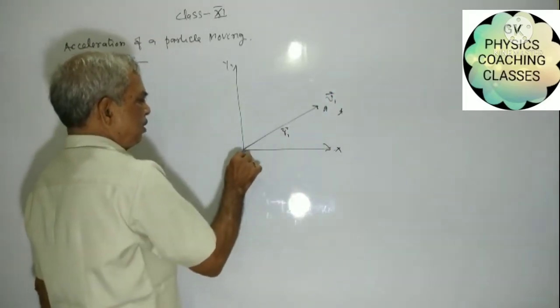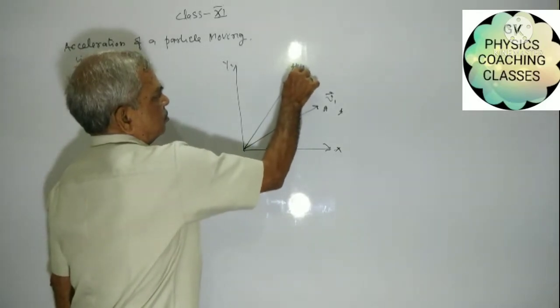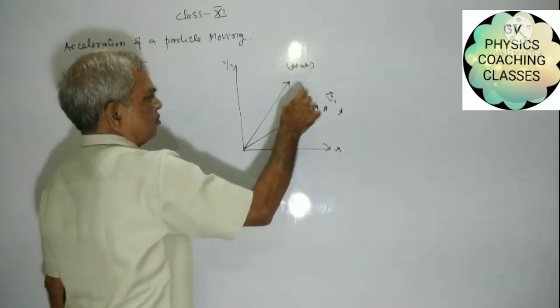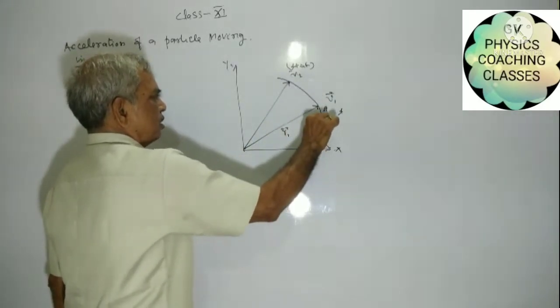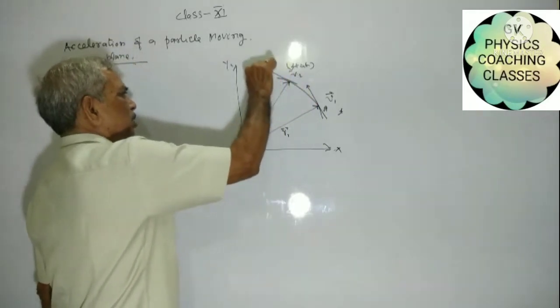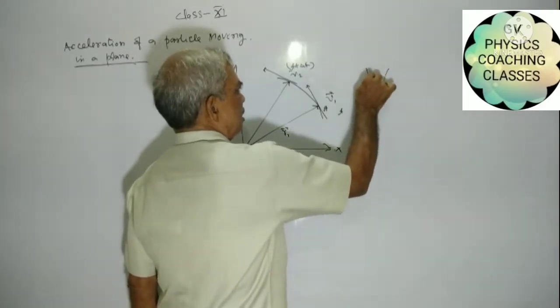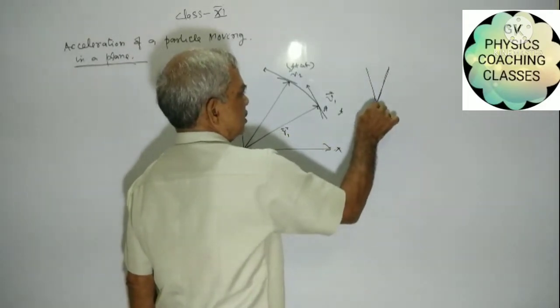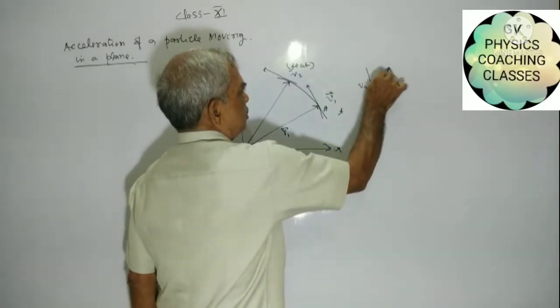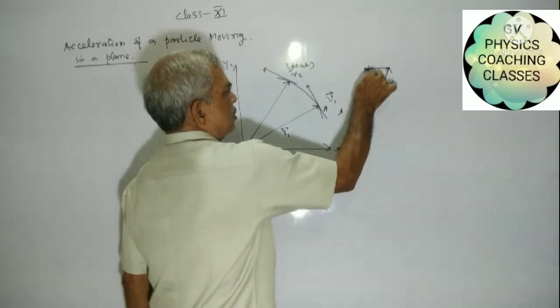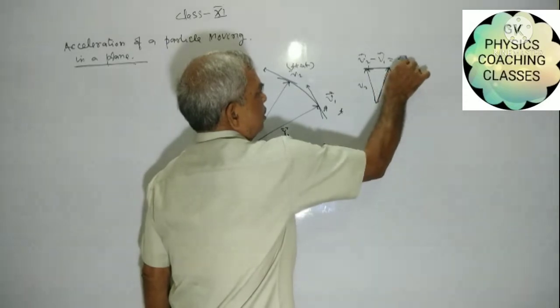Its position vector R1 and velocity V1. And after time T plus delta T, its velocity V2. The direction of velocity is along the tangent, so we can write this way. This is V1 and this is V2. This is V2 minus V1 equal to delta V.